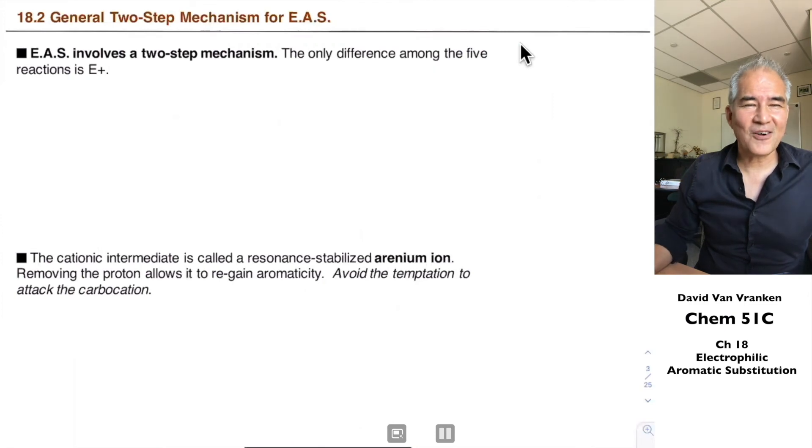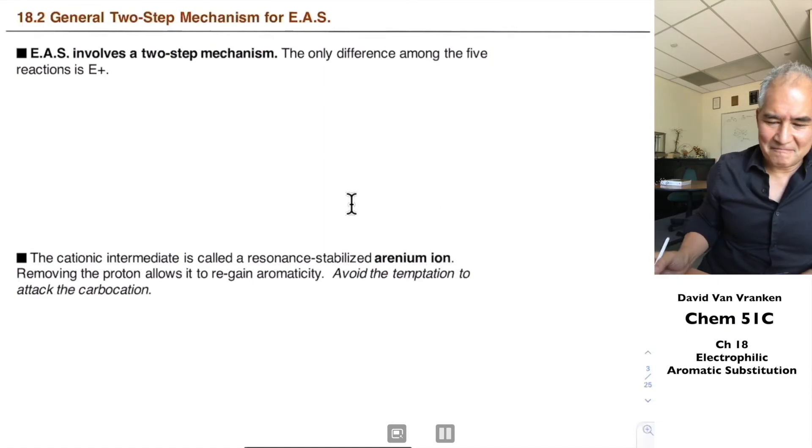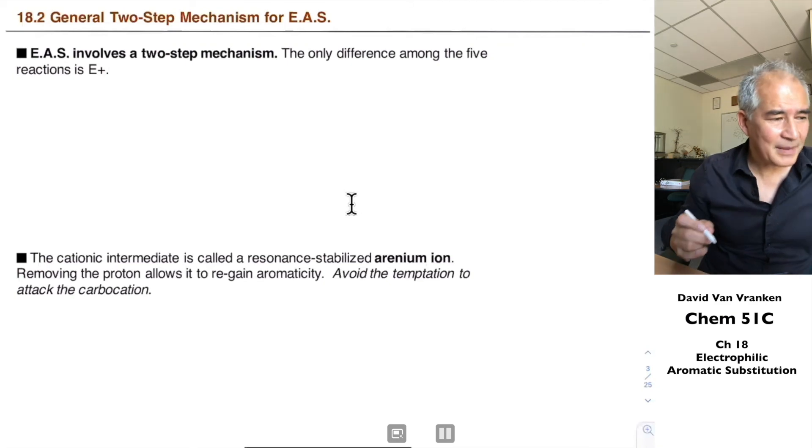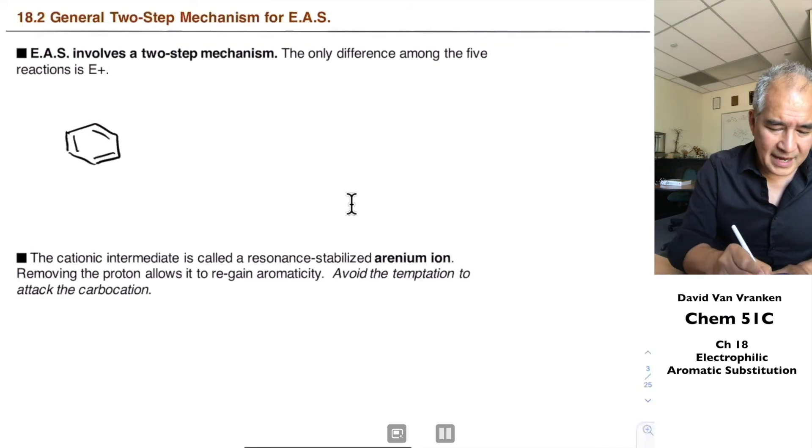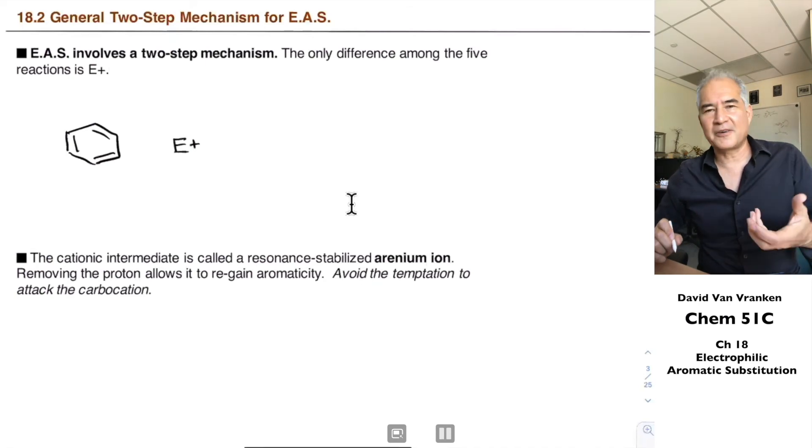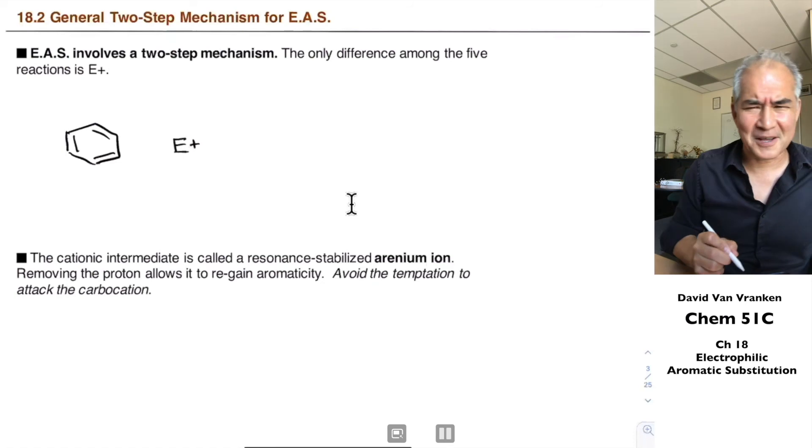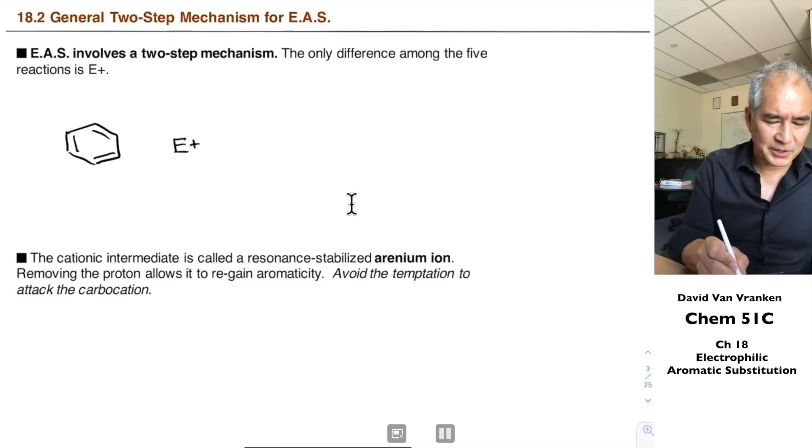Now all those five recipes all go through the same basic mechanism. It's the same mechanism. The only thing that is different is the electrophile that's adding to the benzene ring. Those five recipes just generate different electrophiles for going through the same mechanism. So let's talk about this mechanism for electrophilic aromatic substitution.